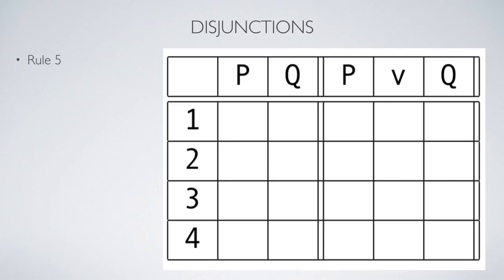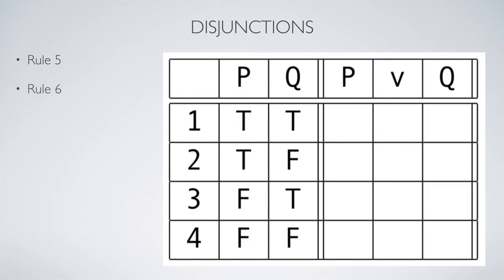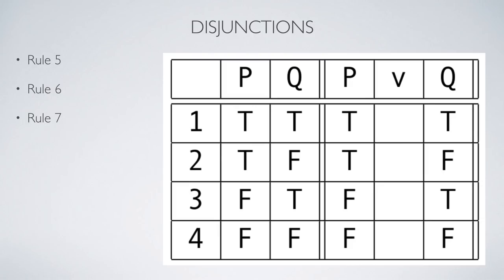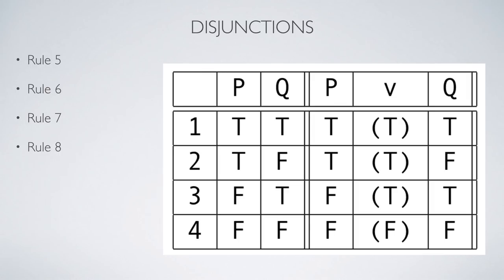Applying Rules 5 through 8 for disjunctions: Rule 5 — two variables, four rows. Rule 6 — every possible combination of truth assignments for P and Q. Rule 7 — copy and paste those truth assignments to every instance of the variables in the formula. For Rule 8, following truth conditions for disjunction: row one — both true, so the disjunction is true. Row two — P is true, so it's true. Row three — Q is true, so the disjunction is true. Only in row four are both component disjuncts false, so the disjunction is false there.